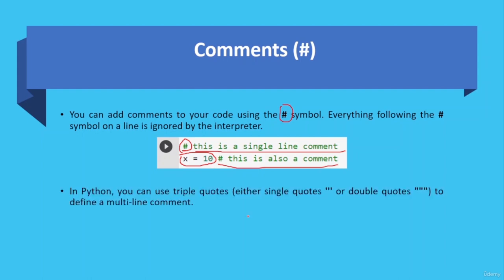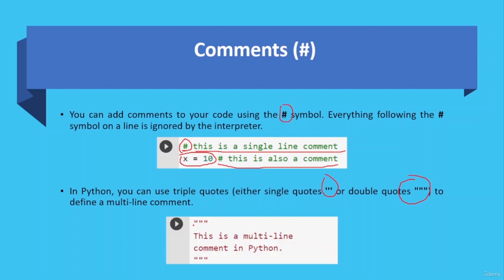In Python you can use triple quotes — either single or double quotes — to define a multi-line comment. Here is the example: you put the triple quote at the start, write your explanation or comment in between the triple quotes, and end the comment with triple quotes as well. So in case of a multi-line comment, you need to define the start and end using triple quotes.